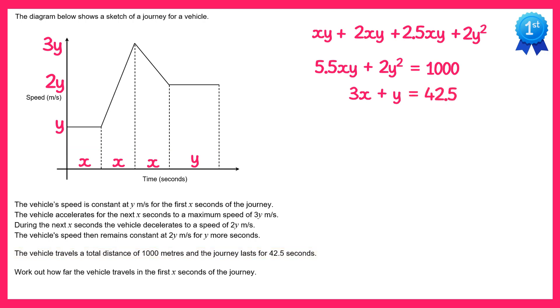So we've now just got simultaneous equations to solve. I'm going to double both of the equations to remove the decimals, so we get 11xy plus 4y squared equals 2000 and doubling the second one gives you 6x plus 2y equals 85.